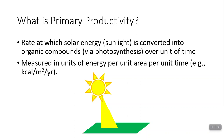So what is primary productivity? Its formal definition is: the rate at which solar energy is converted into organic compounds via photosynthesis over a unit of time. It's measured in units of energy per unit area per unit time. Here I have an image representing sunlight being converted into chemical energy in biomolecules — how much energy is being captured per unit area.